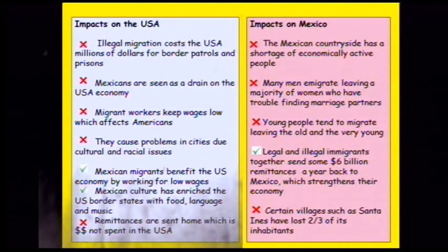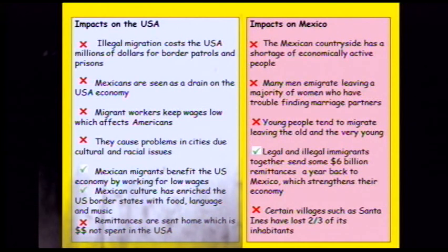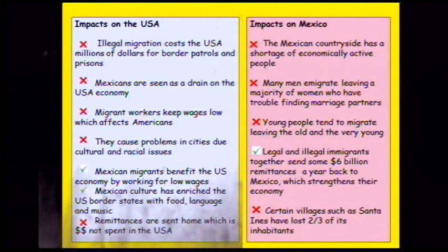There are lots of impacts of migration on both countries, both positive and negative. Negative impacts on the USA: illegal migration costs millions of dollars for border patrols and prisons; Mexicans are seen as a drain on the US economy; Mexican migrant workers keep wages in America very low; and they can sometimes cause problems in cities due to cultural and racial issues. On the positive side, Mexican migrants work for very low wages and do the more menial jobs others don't want, and they bring their culture enriching border states with food, language and music. A final negative is that Mexicans send remittances home — money earned in the USA is sent back to Mexico and not spent in the USA, affecting the US economy.